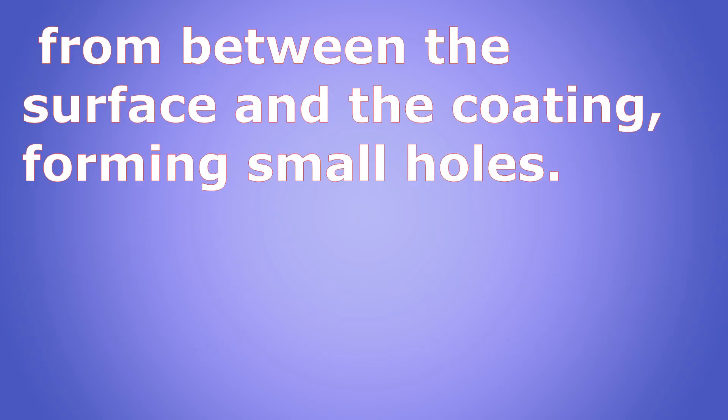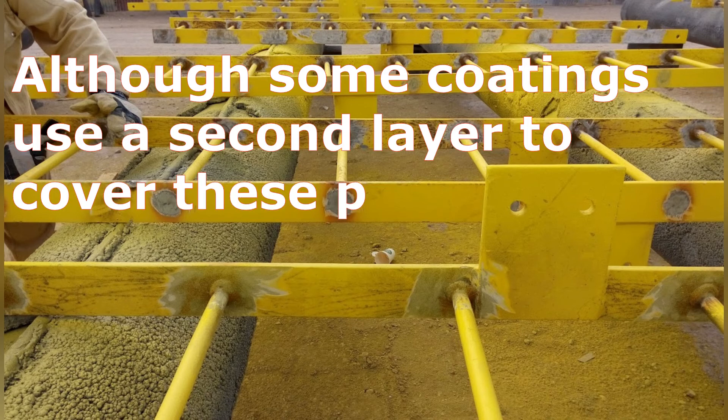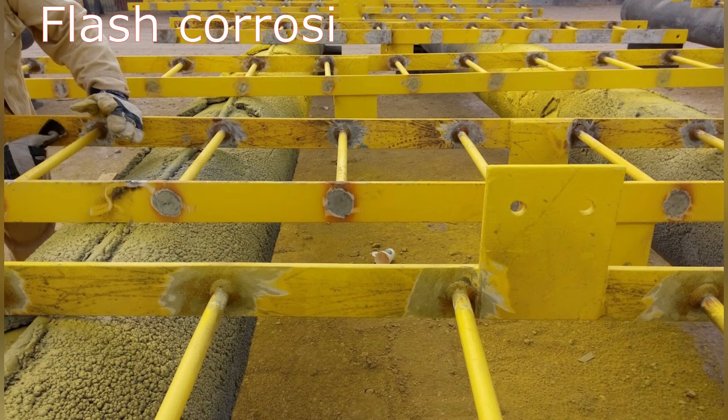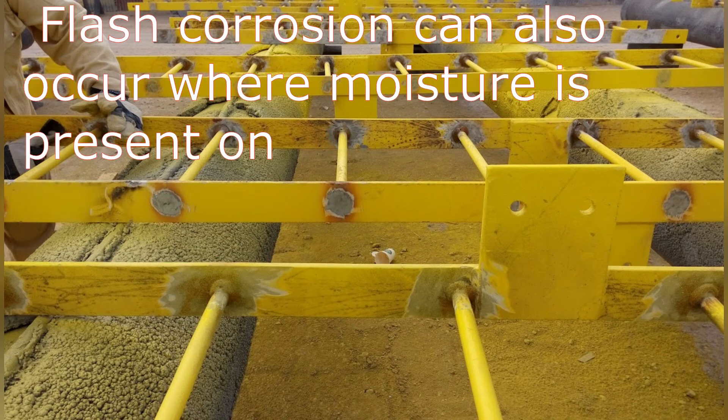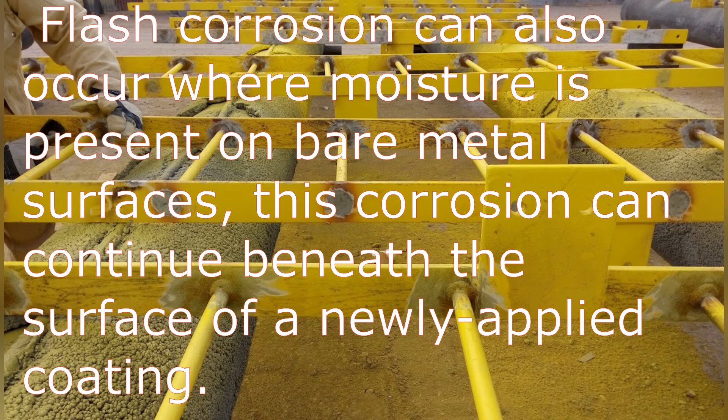Although some coatings use a second layer to cover these pin holes, moisture can also negatively impact drying times. Flash corrosion can also occur where moisture is present on bare metal surfaces. This corrosion can continue beneath the surface of newly applied coating.